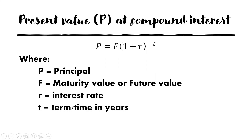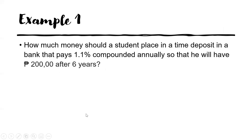The present value P at a compound interest — the formula for finding the present value is P equals F times the quantity 1 plus R raised to negative T, where P is the principal, F is the maturity value or the future value, R is the interest rate, and T is the term or time in years.